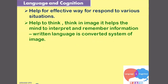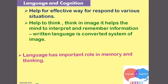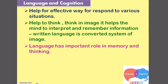Language helps the mind to think in images and to interpret and process reasonable information. Written language is a converted system of images — the written language is the converted system of images in our mind, and images are developed through thinking. Language has an important role in memory and thinking; in order to make proper memorization and thinking, we need language.